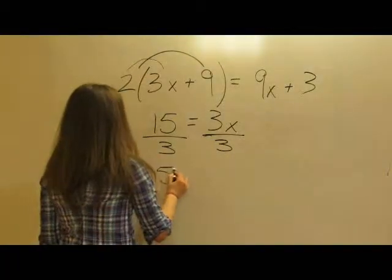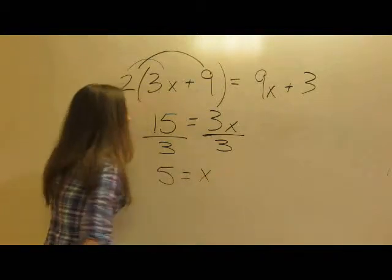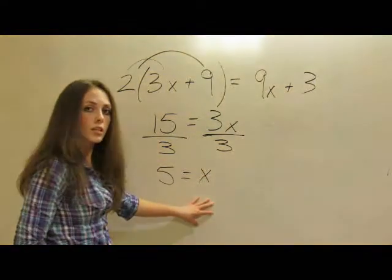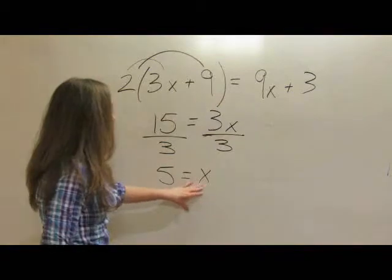That gives us 5 equals x. Now we have x by itself on one side of the equation. And we can see that x equals 5 or 5 equals x.